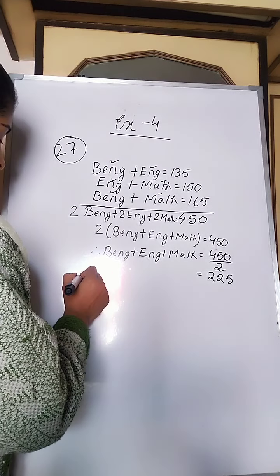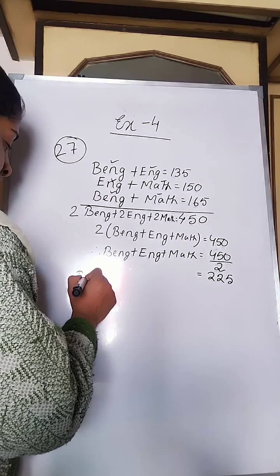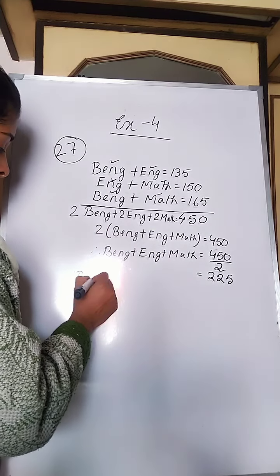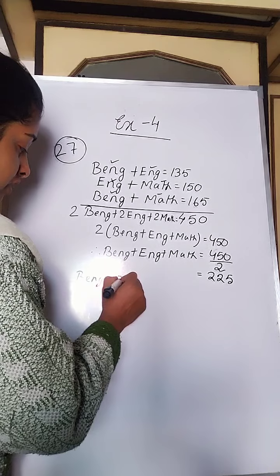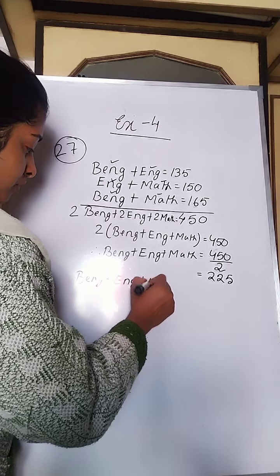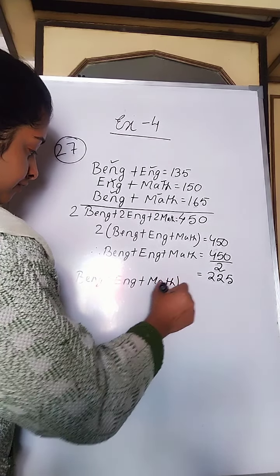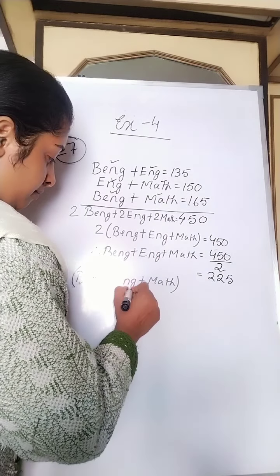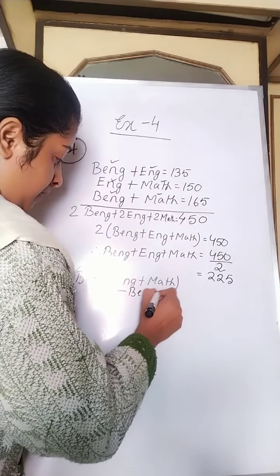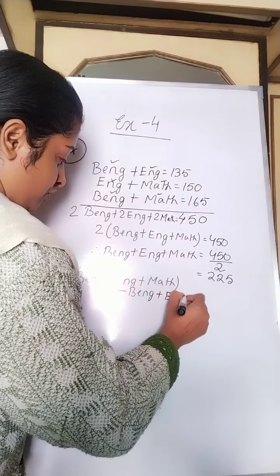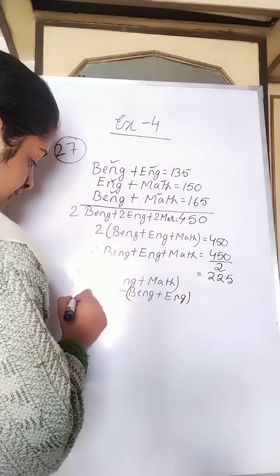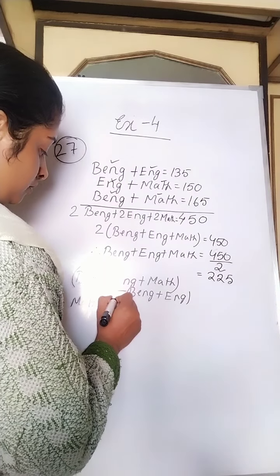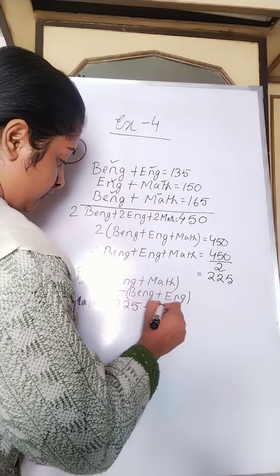Now we find each student's individual marks in Bengali, English, and Math. From Bengali plus English plus Math, if you deduct Bengali plus English, you get the marks of Math. So Math equals 225 minus 135, which is 90.